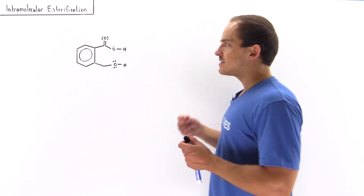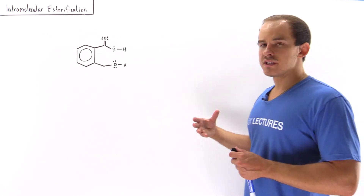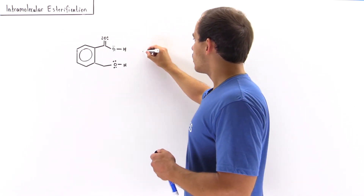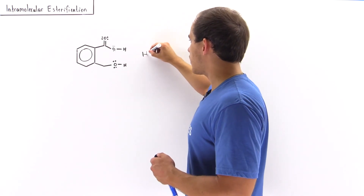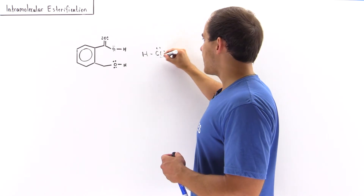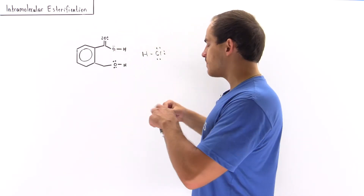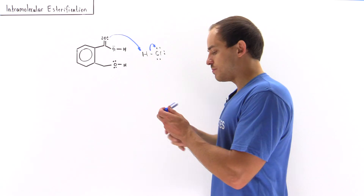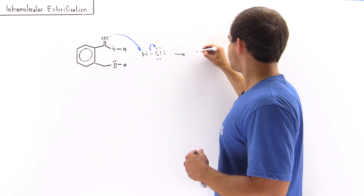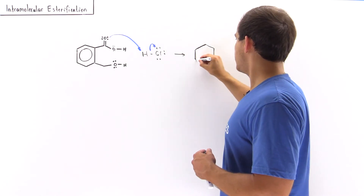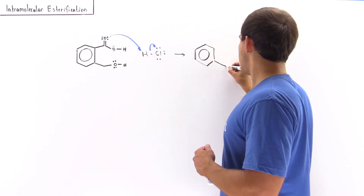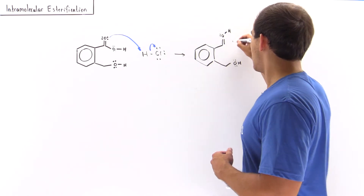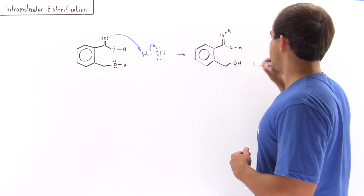The first step of an acid-catalyzed esterification reaction is the addition of the acid and the protonation of the carbonyl oxygen. So in step one, we have hydrochloric acid, and we mix it with this molecule. The protonation of this oxygen takes place, as discussed in the previous lecture, and we produce a resonance-stabilized intermediate. We have the benzene ring, the alcohol, the protonated oxygen, and the OH group.